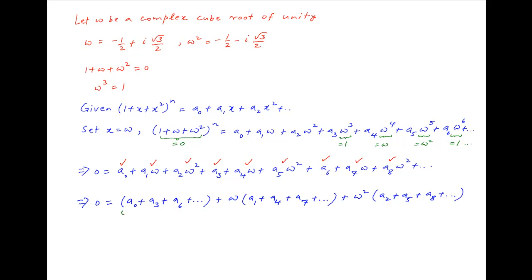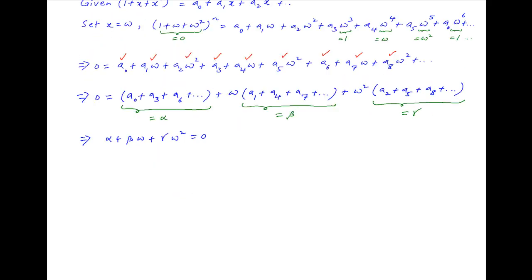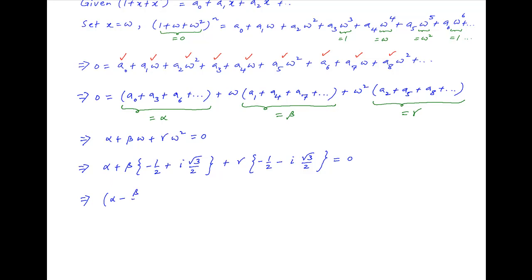Now on the right hand side, if you denote the expression in the first bracket by alpha, the expression in the second bracket by beta, and the expression in the third bracket by gamma, this can be written as alpha plus beta omega plus gamma omega square is equal to 0. Substituting the value of omega and omega square, this becomes alpha plus beta times in brackets minus half plus i times root 3 upon 2, plus gamma times in brackets minus half minus i times root 3 upon 2, is equal to 0. This can be written as alpha minus beta upon 2 minus gamma upon 2, which are the real terms, plus i times root 3 upon 2 times in brackets beta minus gamma, is equal to 0.